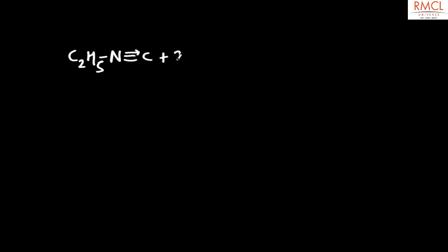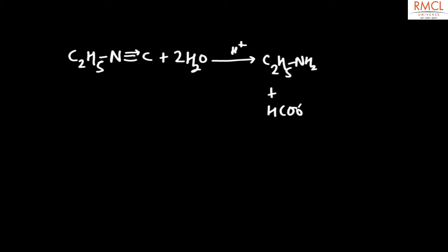Ethyl isocyanide, when hydrolyzed in the presence of acid, converts into ethylamine (C2H5NH2) plus HCOOH, which is methanoic acid (formic acid). So the correct answer for this question is Option A.